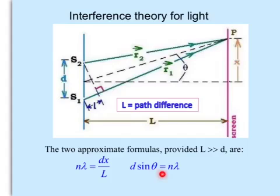For this formula here, θ (theta) is the angle between the center line and the line drawn from the middle of the two sources to the point in question. So remember that—be aware of these two formulas.